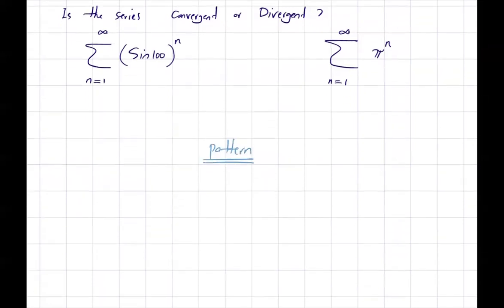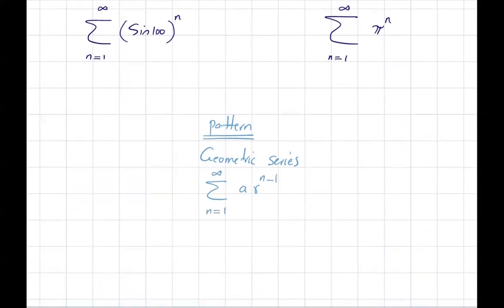The pattern that we are recognizing is geometric series. In general, a geometric series is defined as the summation of a r to power n minus 1, n starts from 1 goes to infinity. And if the ratio has absolute value less than 1, or r is bounded between negative 1 and 1, this is convergent to a divided by 1 minus r.